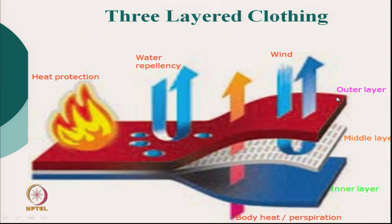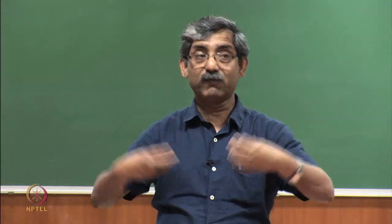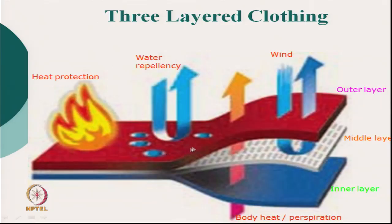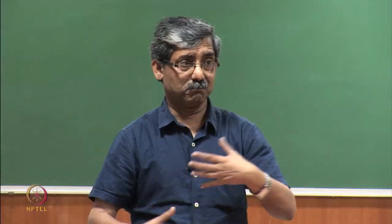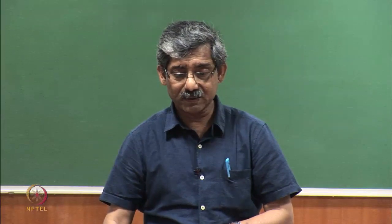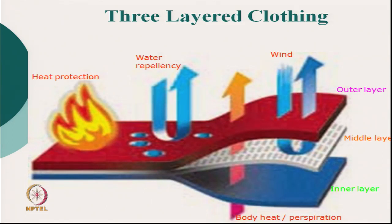For example, if you are using fire protective clothing, the outer layer performs heat protection — it should be fireproof, and there should be a reflective coating. You may have seen aluminized coated fabric layers given on the outside to reflect radiative heat. The outer layer can also be waterproof with a water repellent finish — it is essentially a functional layer. The inner layer, which is in contact with our body, has to be soft and comfortable to touch. Body heat and perspiration should flow through all three layers; otherwise, we will not feel comfortable.